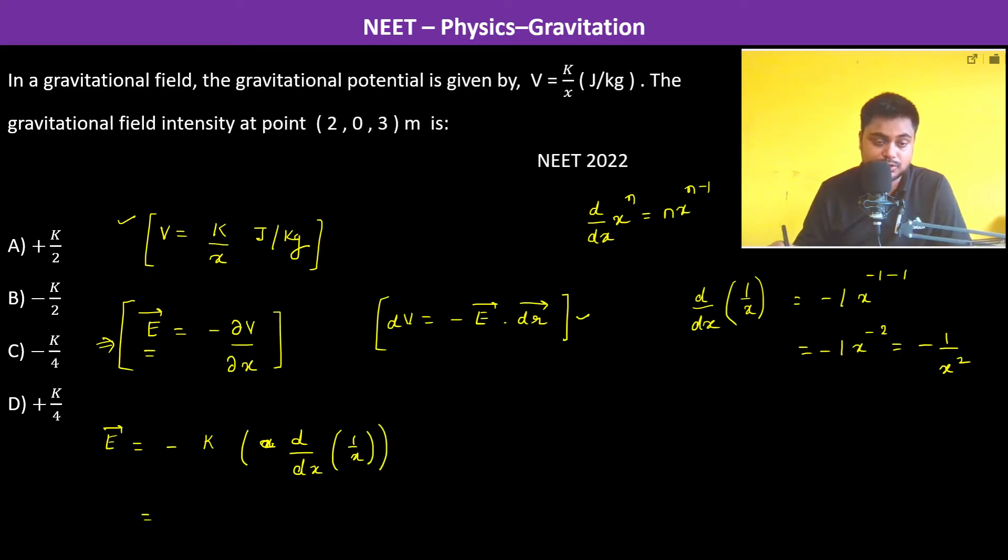So this is equal to -k into -1/x², which is equal to k/x². Now this is the general formula of the gravitational field. Now we have to find out at this point...